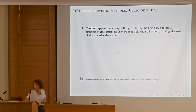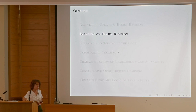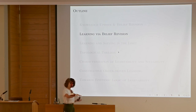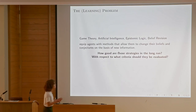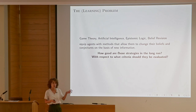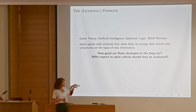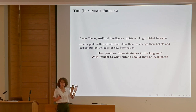Those are methods for updating, methods for change — but not yet learning methods. The learning part should have some condition that makes sense in the long run: that you actually learn what you're supposed to be learning. So learning via belief revision: we want to take these belief revision methods, plug them into the learning method, and see how the learning method does on the learning problem — whether it's universal or not.